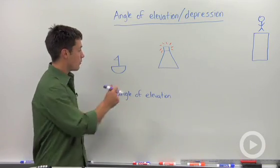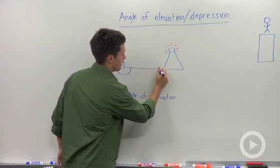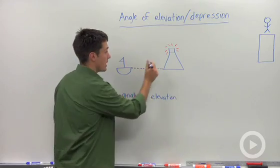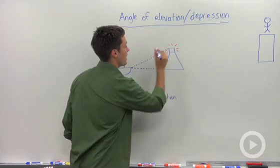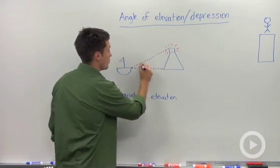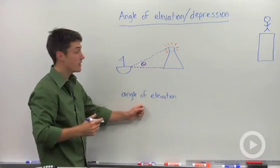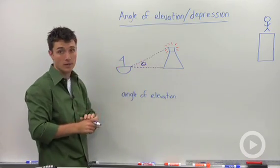If we said that the water level was our zero, then the angle that this boat would have to look up to see the very top of that lighthouse would be theta, or our angle of elevation, how high up they had to look.